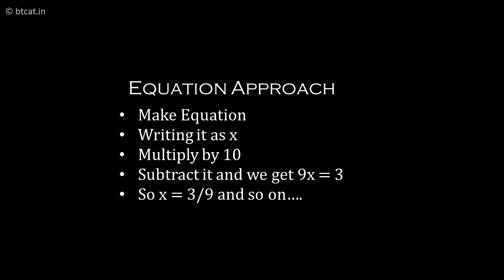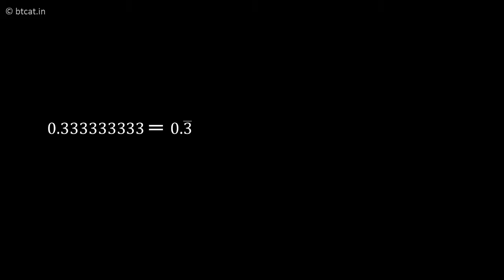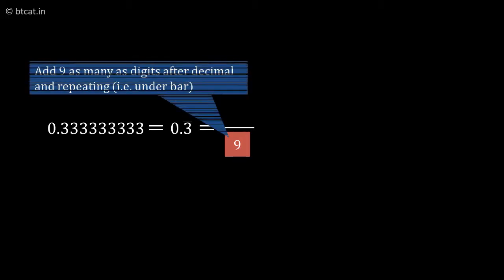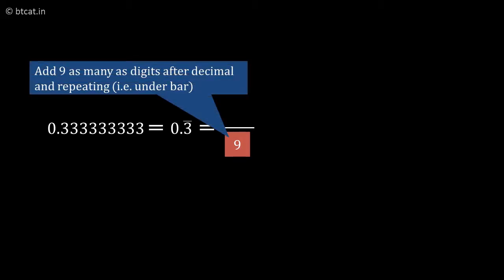But I'd like to tell you an amazing trick. For 0.3 bar, we write 9 in the denominator. Whatever number of digits has the bar, we put that many 9s in the denominator, and in the numerator we keep the digits as is. So 0.3 bar becomes 3/9.